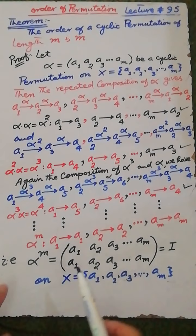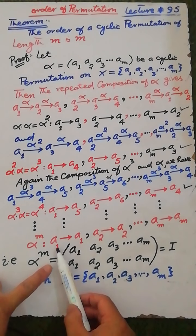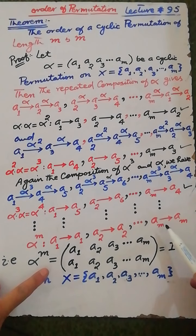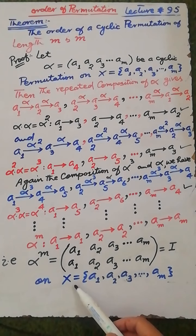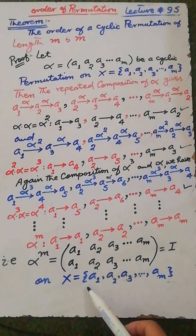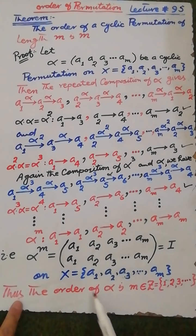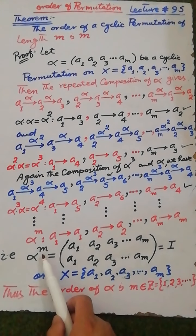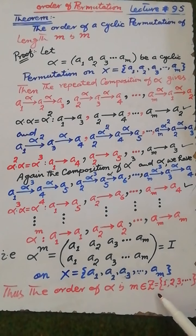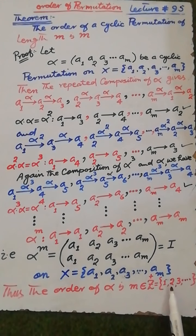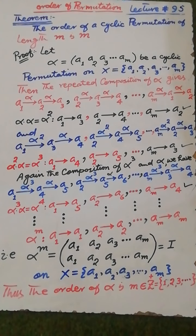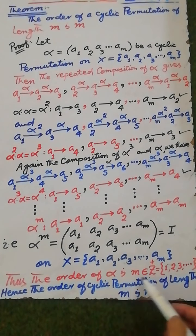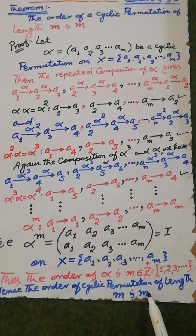Therefore alpha to the power m is equal to: a1 maps to a1, a2 maps to a2, a3 maps to a3, and so on, am maps to am, which is the identity permutation on set X, where the elements of X are a1, a2, a3, ..., am. Thus the order of the permutation alpha is m, where m is a positive integer. Hence the order of a cyclic permutation of length m is m.